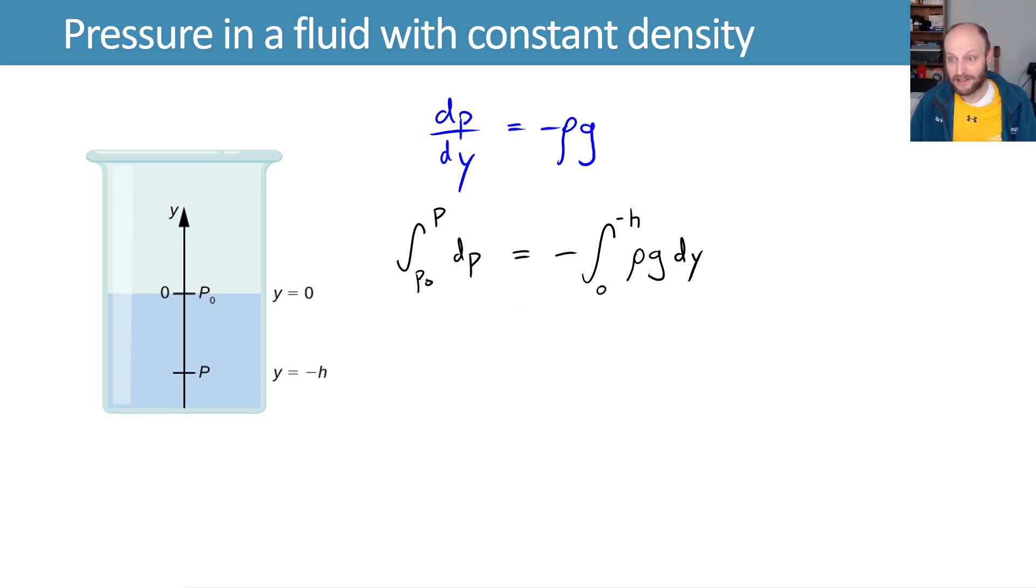If we have a constant density, we can assume that this density times gravity is constant with respect to y, so it comes out of the integral, and we just get the integral of dy becomes y, which we evaluate between the limits, giving us negative h minus zero.